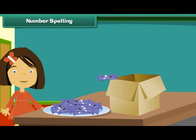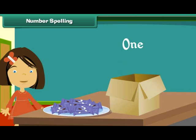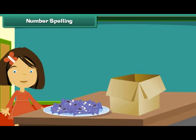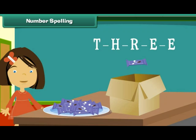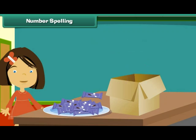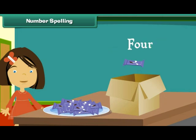Here is the first chocolate. It goes into the box. O-N-E, 1. Here is the second. It also goes into the box. T-W-O, 2. T-H-R-E-E, 3. F-O-U-R, 4. F-I-V-E, 5.